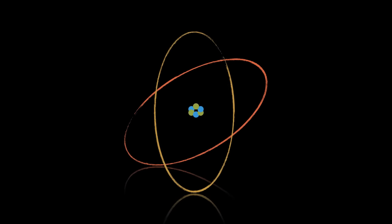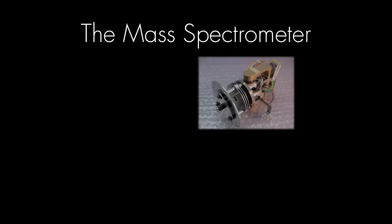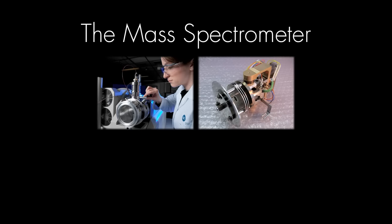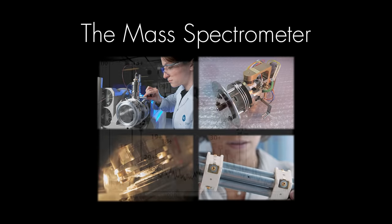Welcome to subtopic 2.2, the mass spectrometer. The mass spectrometer is a vital instrument in many kinds of chemical analysis. But how does it work, and how do we interpret the data that we get from it?